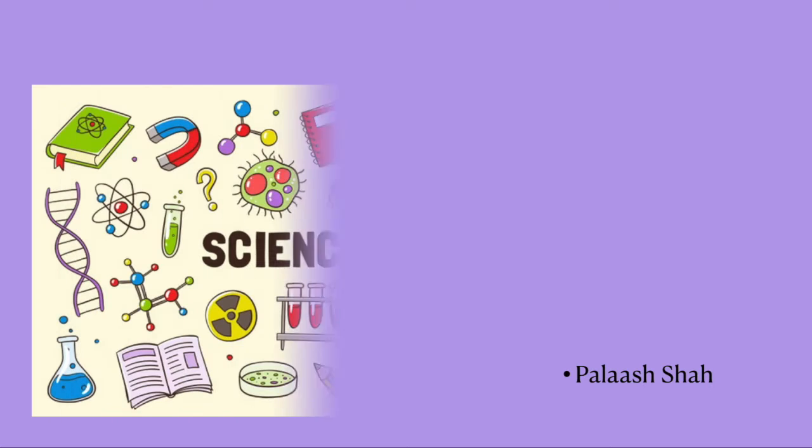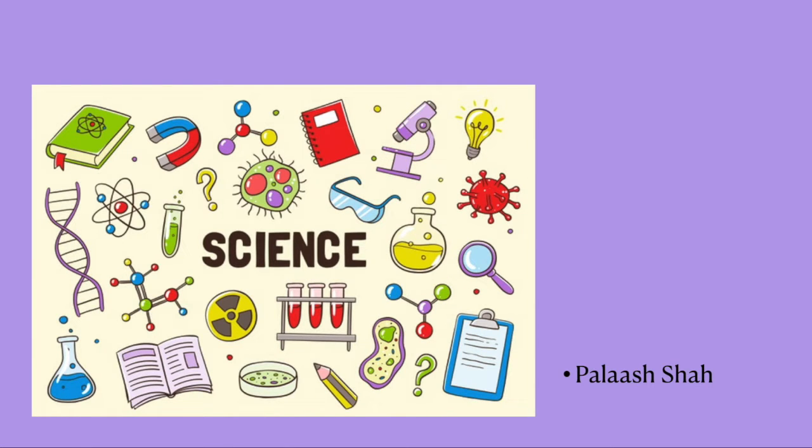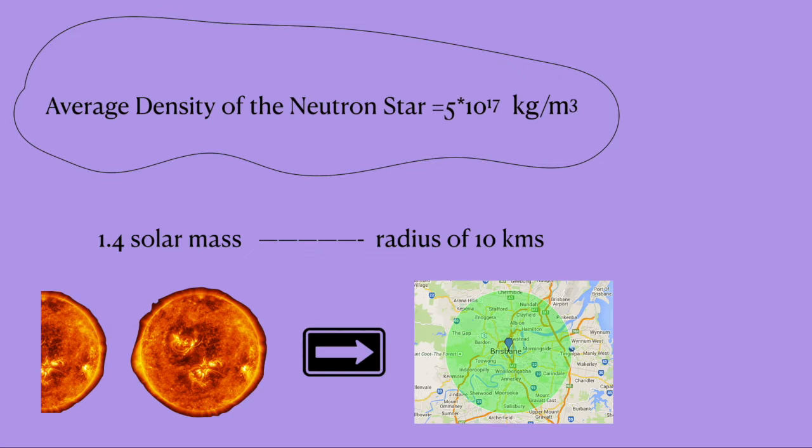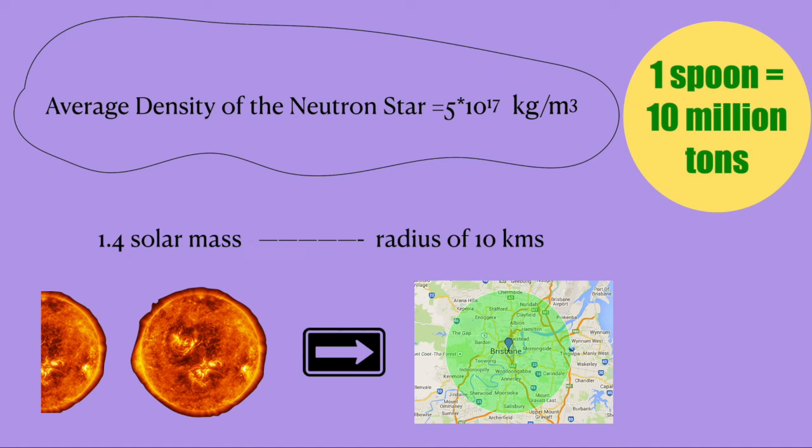Hey guys, I am Palash Shah and on this channel, we are going to be discussing some pretty exciting topics of science. Today we are going to be dealing with neutron stars. So let's start. Neutron stars are highly dense stars and they are extremely small in size. They have a mass of about 1.4 solar mass in a radius of 10 kilometers. This means that a spoonful of this star would weigh about 10 million tons on Earth.